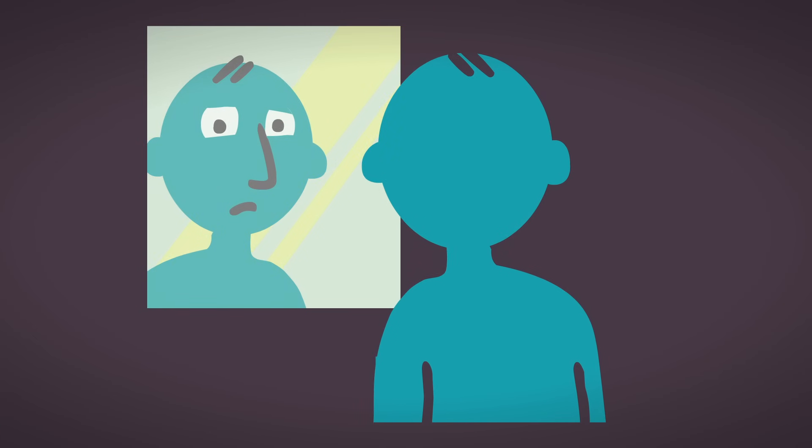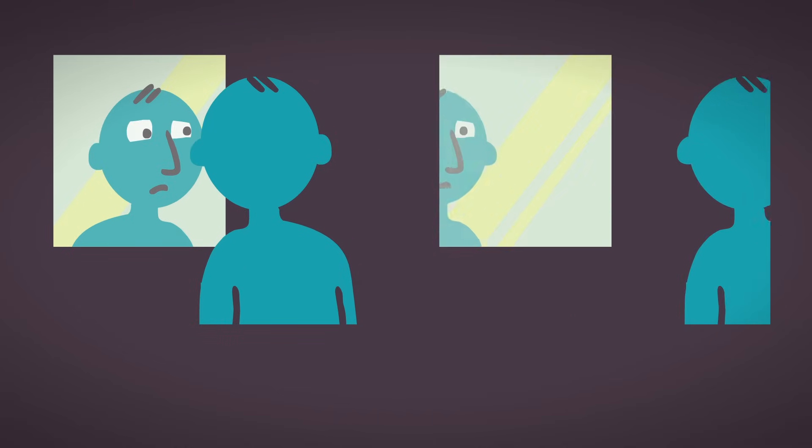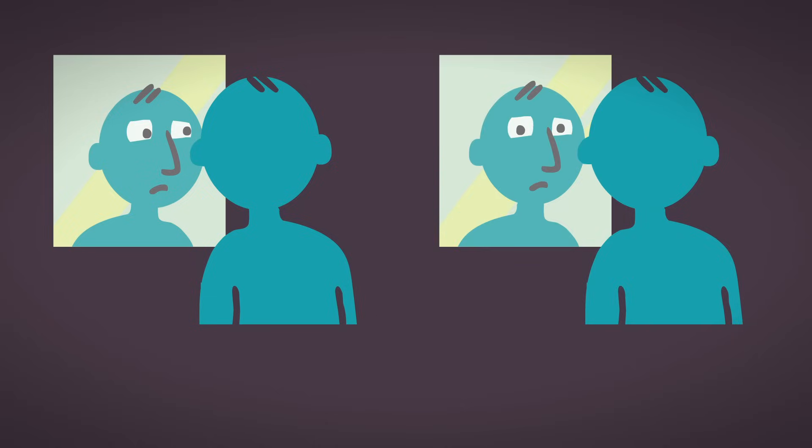And unlike a camera, you briefly stop seeing whenever you make a larger movement with your eyes. That's why you can't see your own eyes shift as you look from one to the other in a mirror.